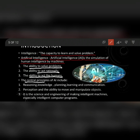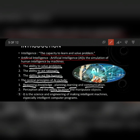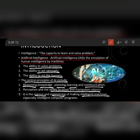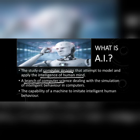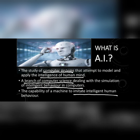The central principles of artificial intelligence include reasoning, knowledge, planning, learning and communication, perception, and the ability to move and manipulate objects. It is the science and engineering of making intelligent machines, especially intelligent computer programs. Basically, it is the study of computer systems that attempt to model and apply the intelligence of the human mind. It is a branch of computer science dealing with the simulation of intelligent behavior in computers — the capability of a machine to imitate intelligent human behaviors.